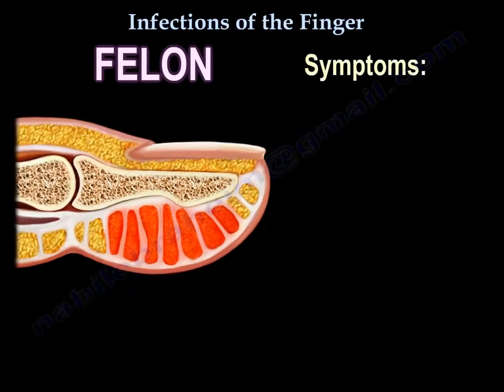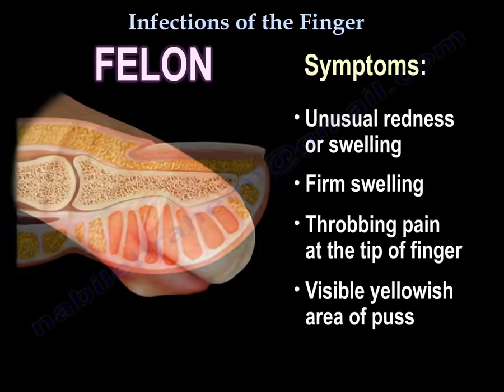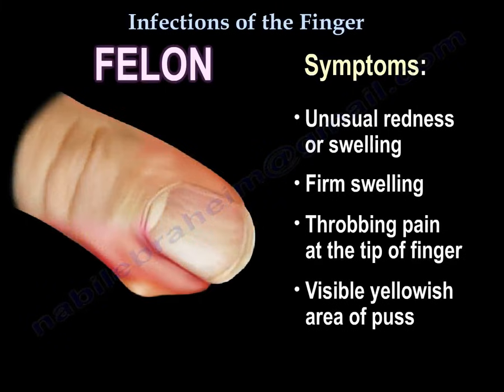Symptoms of a felon include unusual redness or swelling, firm swelling, throbbing pain at the tip of the finger, and a visible yellowish area or pus.